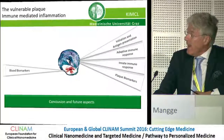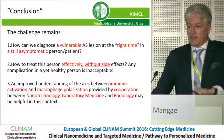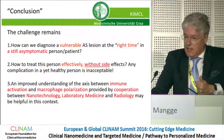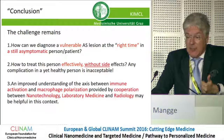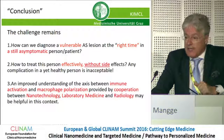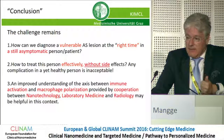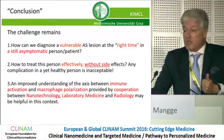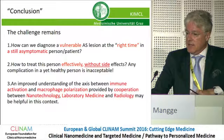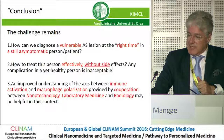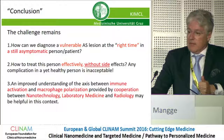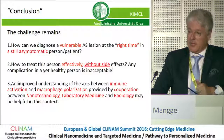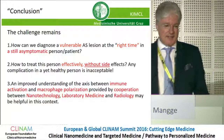In conclusion, the challenge remains: how can we diagnose a vulnerable atherosclerotic lesion at the right time in a still-asymptomatic patient, and how to treat this person effectively without side effects? Any complication in a yet-healthy person is unacceptable. I'm sure that improved understanding of the axis between immune activation, macrophage polarization, and immune system polarization — provided through cooperation between nanotechnology, laboratory medicine, and radiology — may be very helpful in this context. Thank you very much.